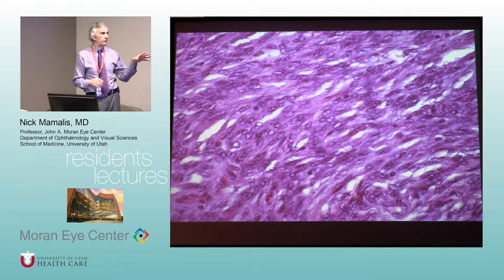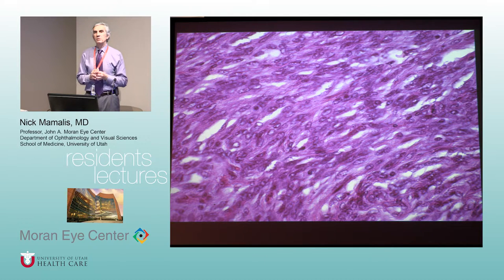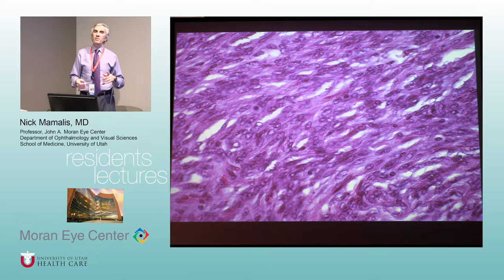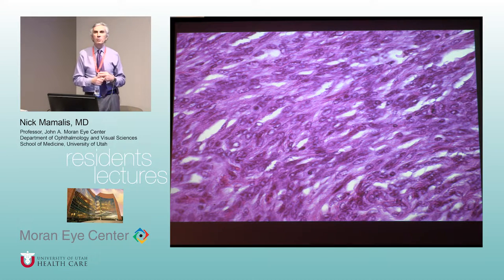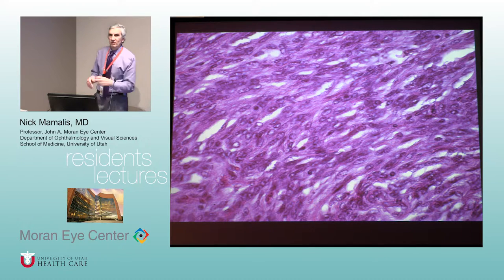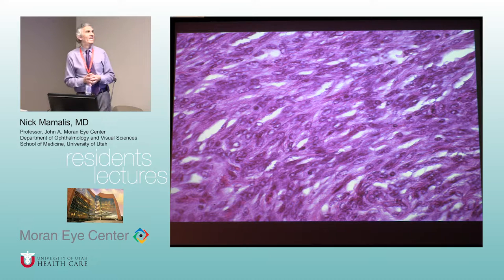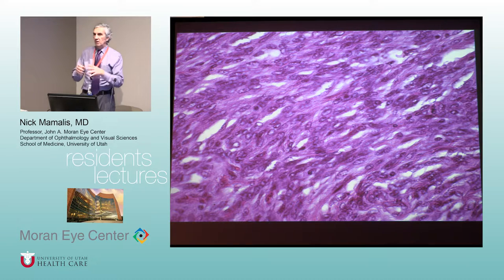The problem with hemangiopericytomas is they are not encapsulated and are very hard to remove completely. Patients have gone back for surgery three and four times, and each time it gets a little more aggressive. A special reticulum stain — a silver stain — is very helpful. The pericytes have a supporting reticular connective tissue network, and the reticulum stain shows this extensive network in black/silver around the cells.